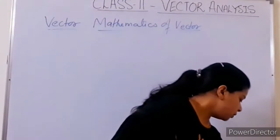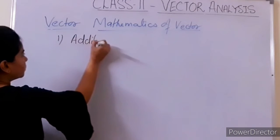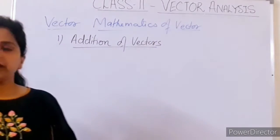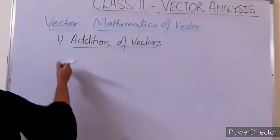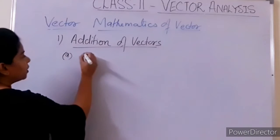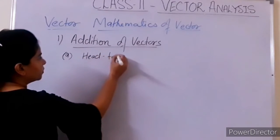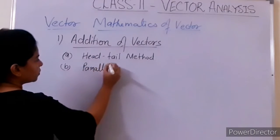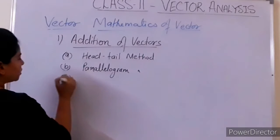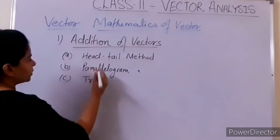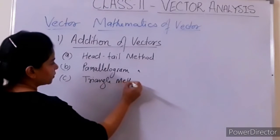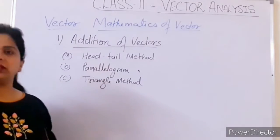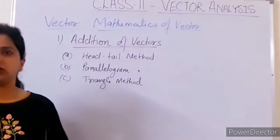Now mathematics of vectors — first we will discuss addition. For vector addition there are three methods. The first one is the head-tail method. The second one is the parallelogram method. And the third one is the triangle method. The head-tail method is used for small vectors; generally we prefer the other two methods.